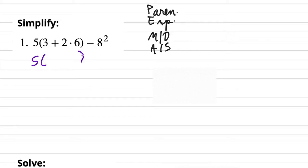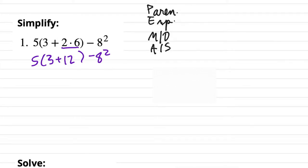I'm going to work within the parentheses first, and within the parentheses we also follow PEMDAS. Are there parentheses within the parentheses? No. No exponents. So we do multiplication and division left to right — it looks like we have a multiplication problem there. All these other numbers are just spectating, like the 5 before the parentheses, the 3, and the minus 8 squared. So we're doing the parentheses: 3 plus 12 is 15, minus 8 squared.